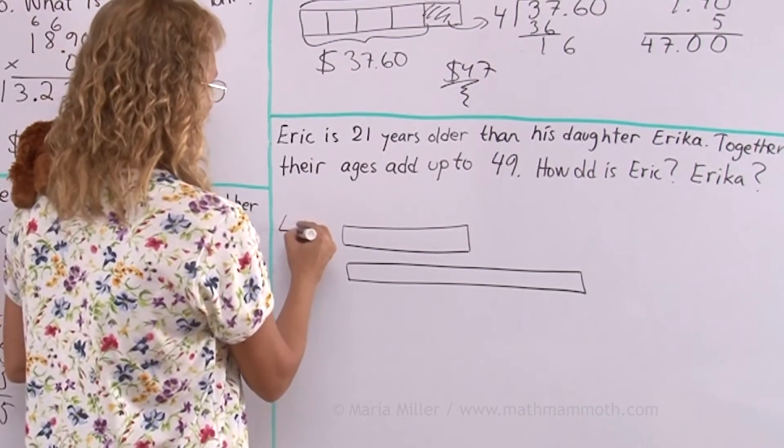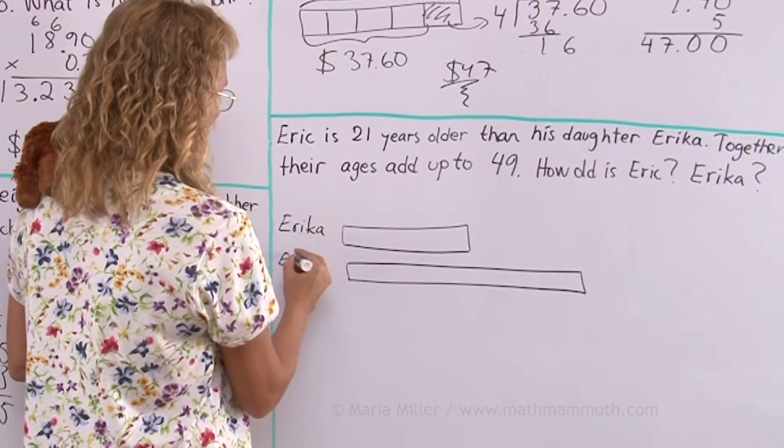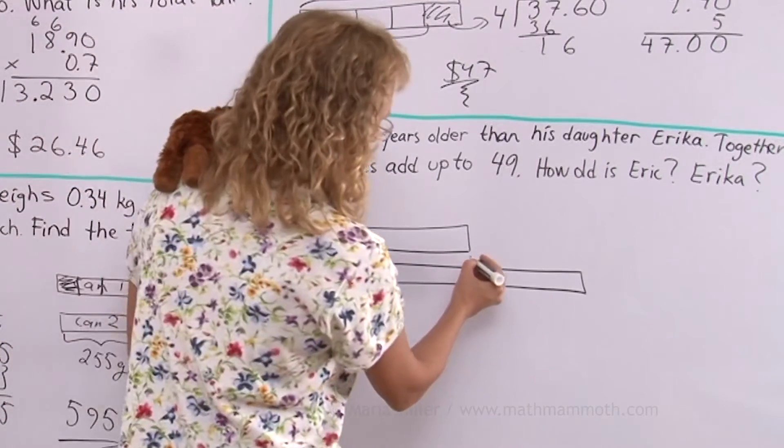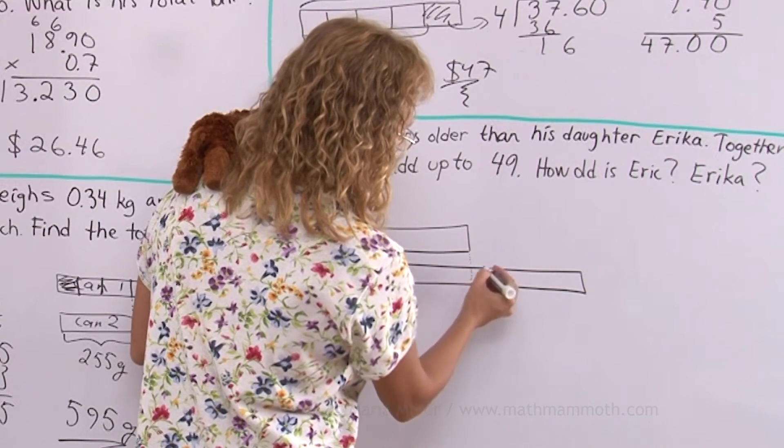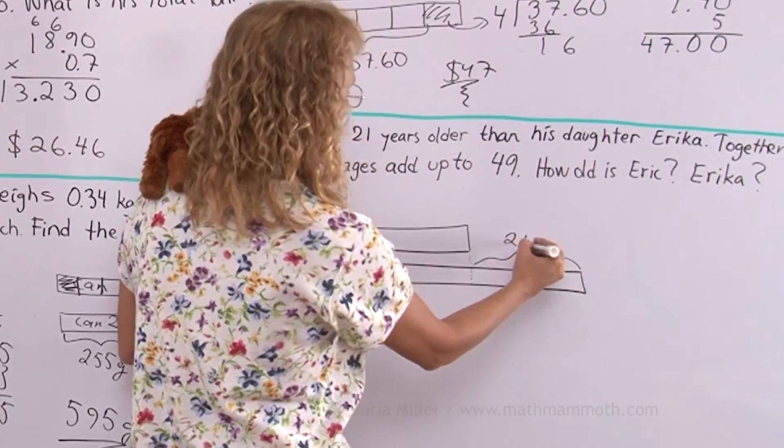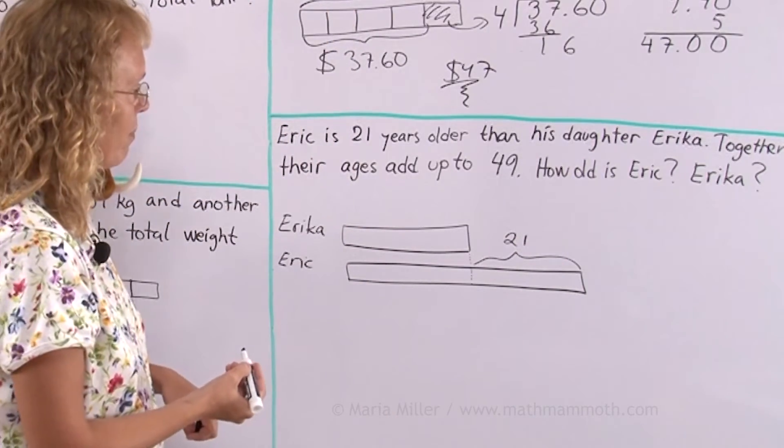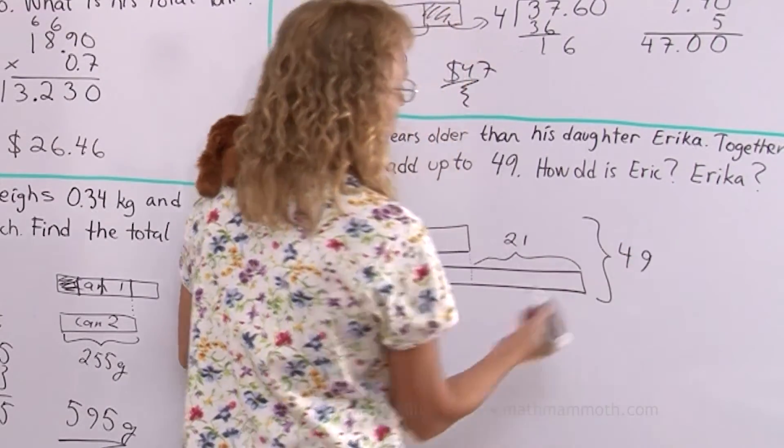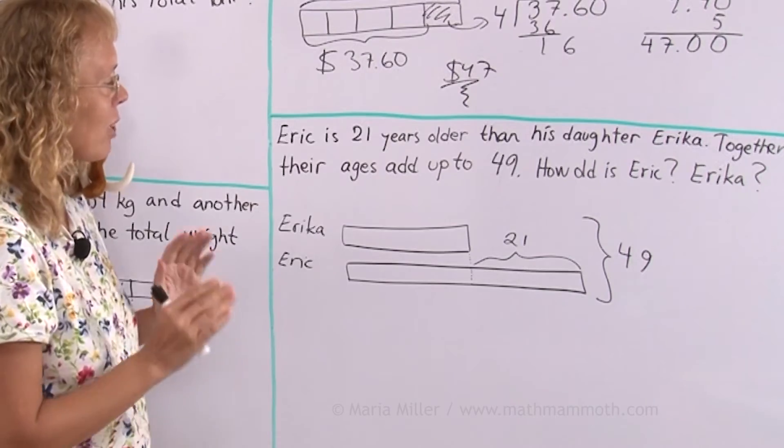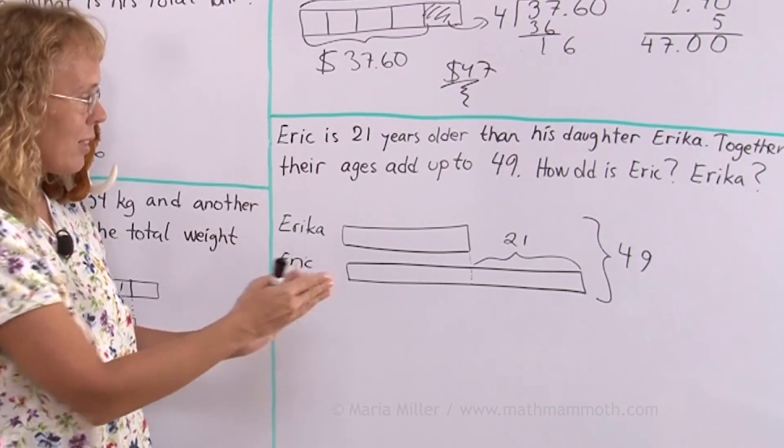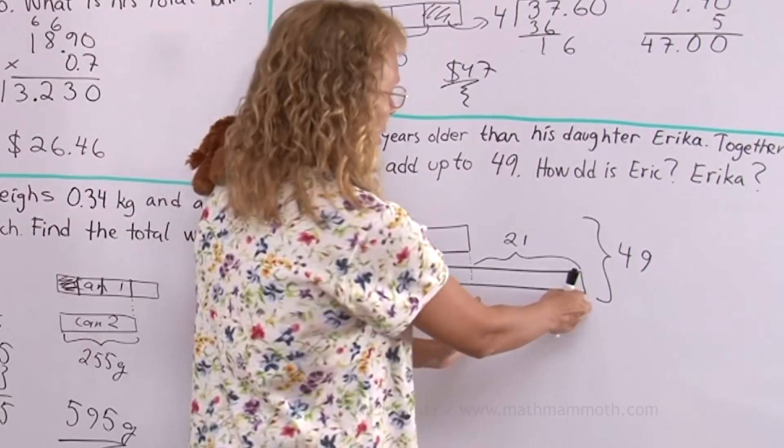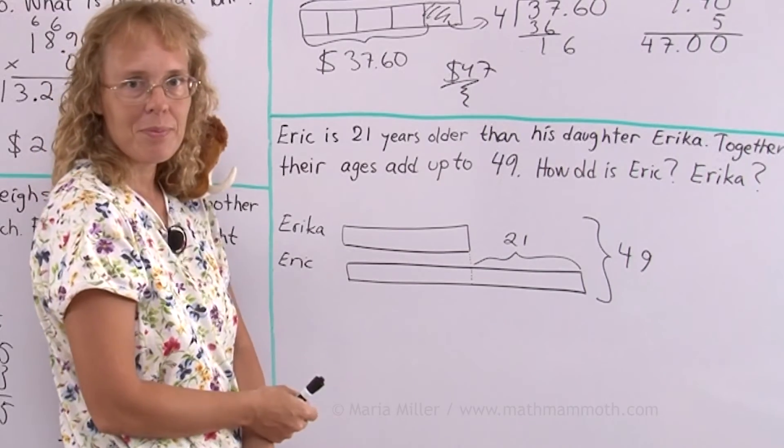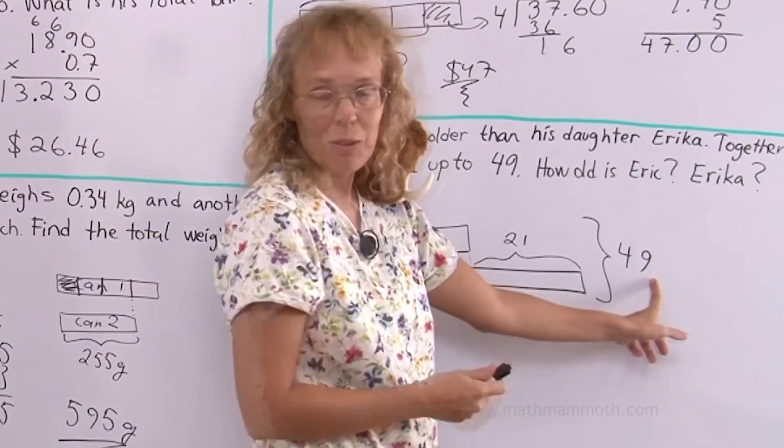Now Eric and Erika. Erika is younger. Eric is here and the difference, this is the difference in the ages, 21. He's 21 years older than her and then the sum both of these together are 49. The general idea to solve this is that I will now subtract 21, take away 21 this here from this diagram. If I take 21 away then what will be the sum of these two? Well you just take away 21 from this number to find out.